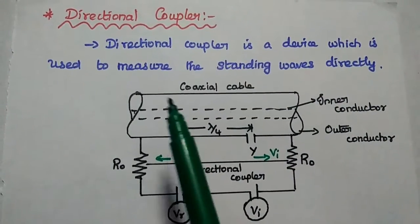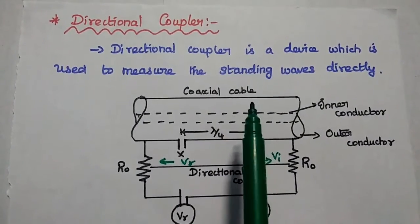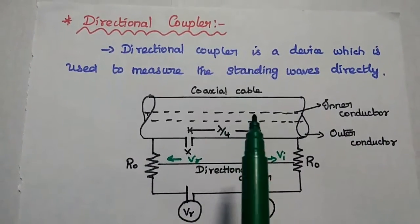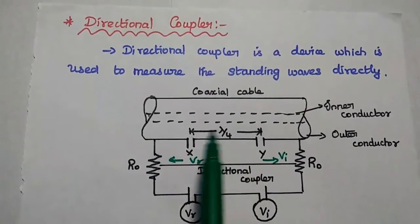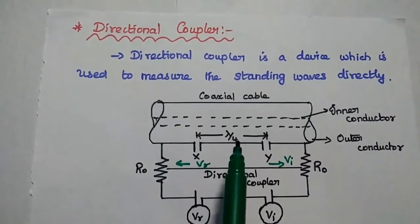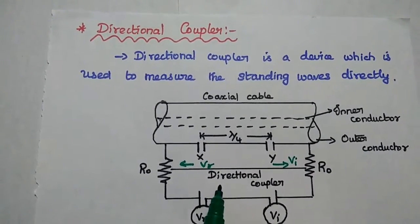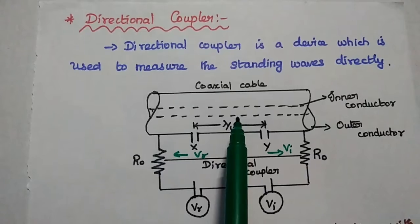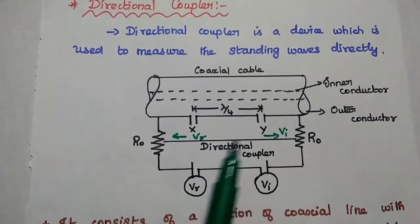The next method is the directional coupler method. It is a device used to measure the standing waves directly from the cable. Here we consider a coaxial cable with two small holes in its outer sheath spaced by λ/4. The distance between these two holes is λ/4. We connect the directional coupler through these holes with the coaxial cable. Some of the energy in the coaxial cable passes through the directional coupler on both sides — left side and right side.